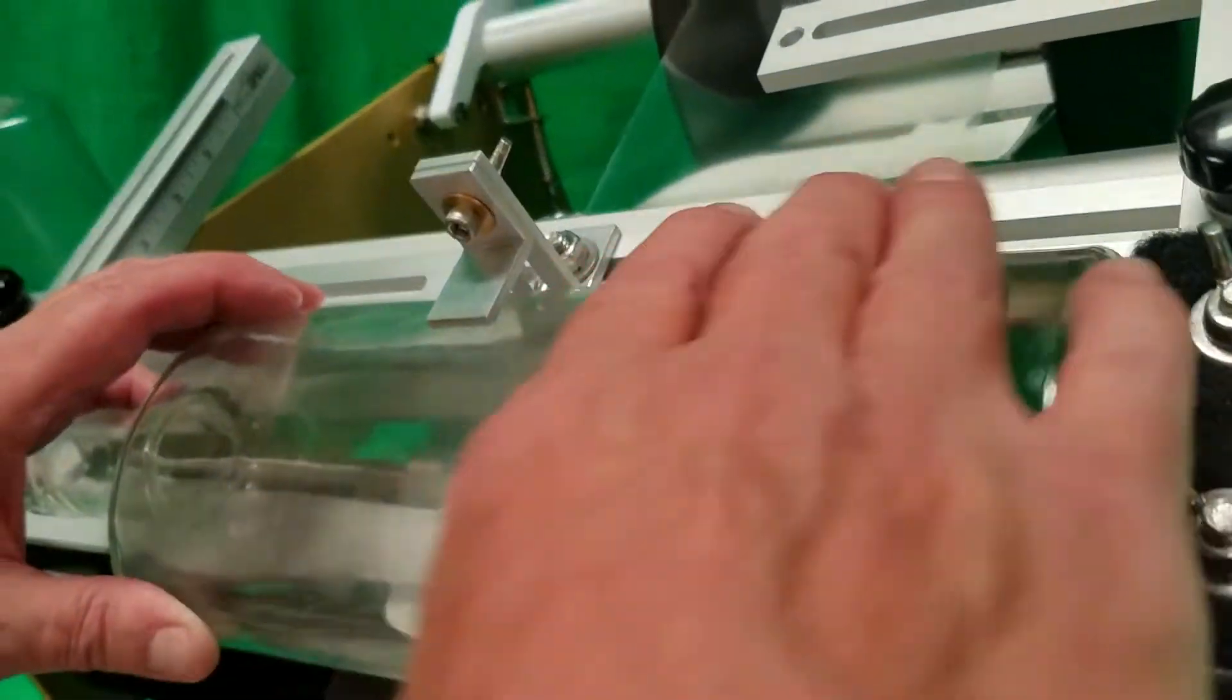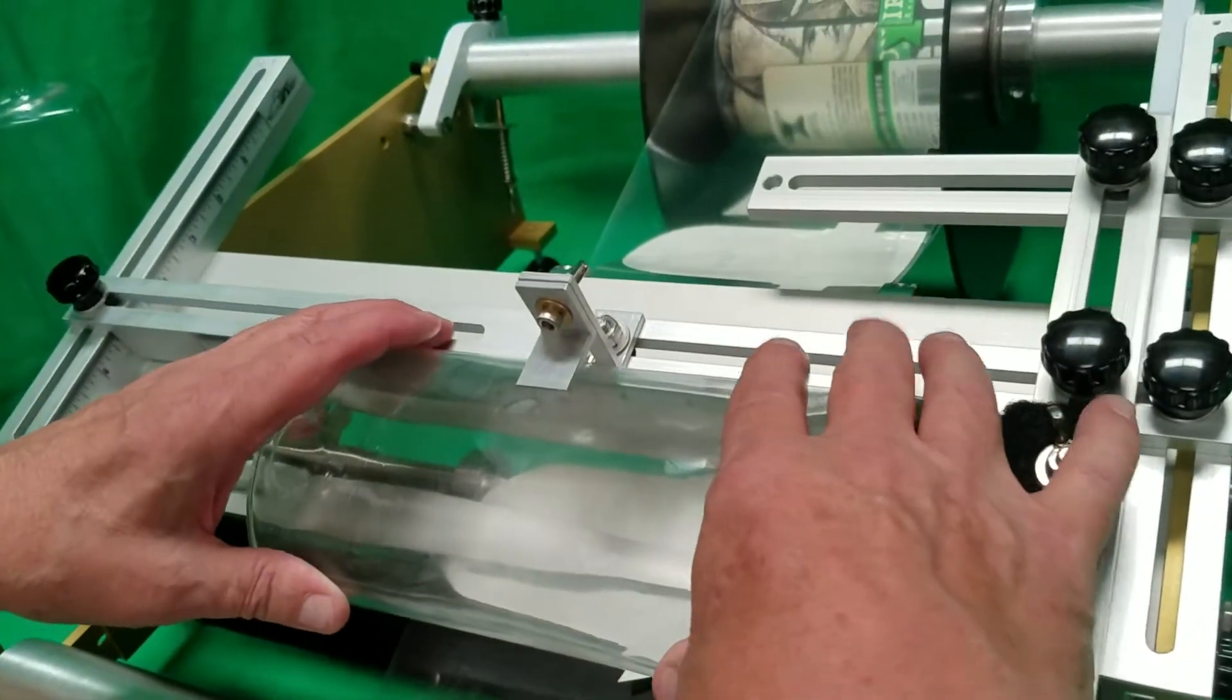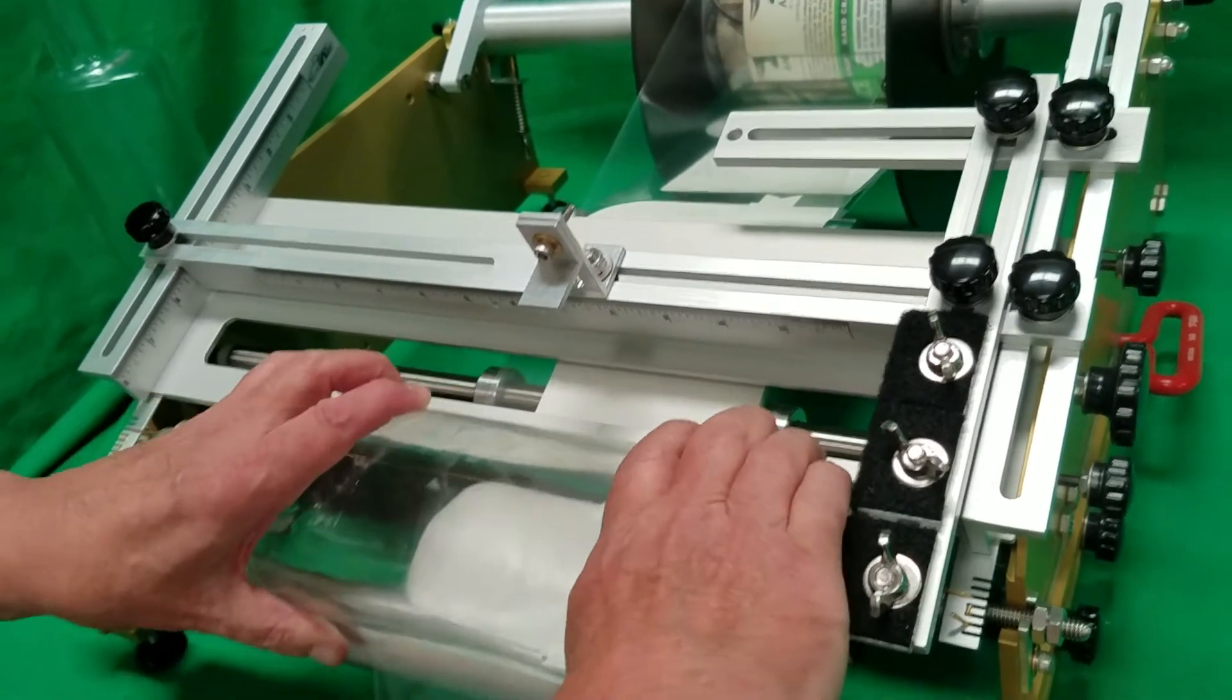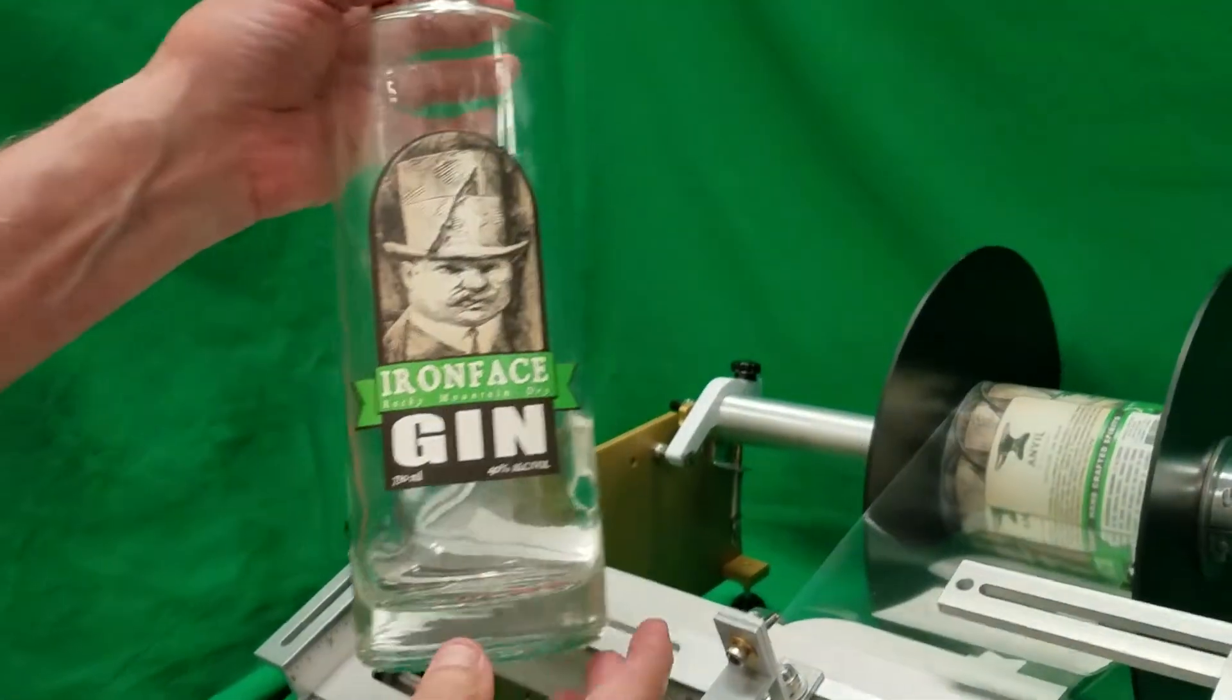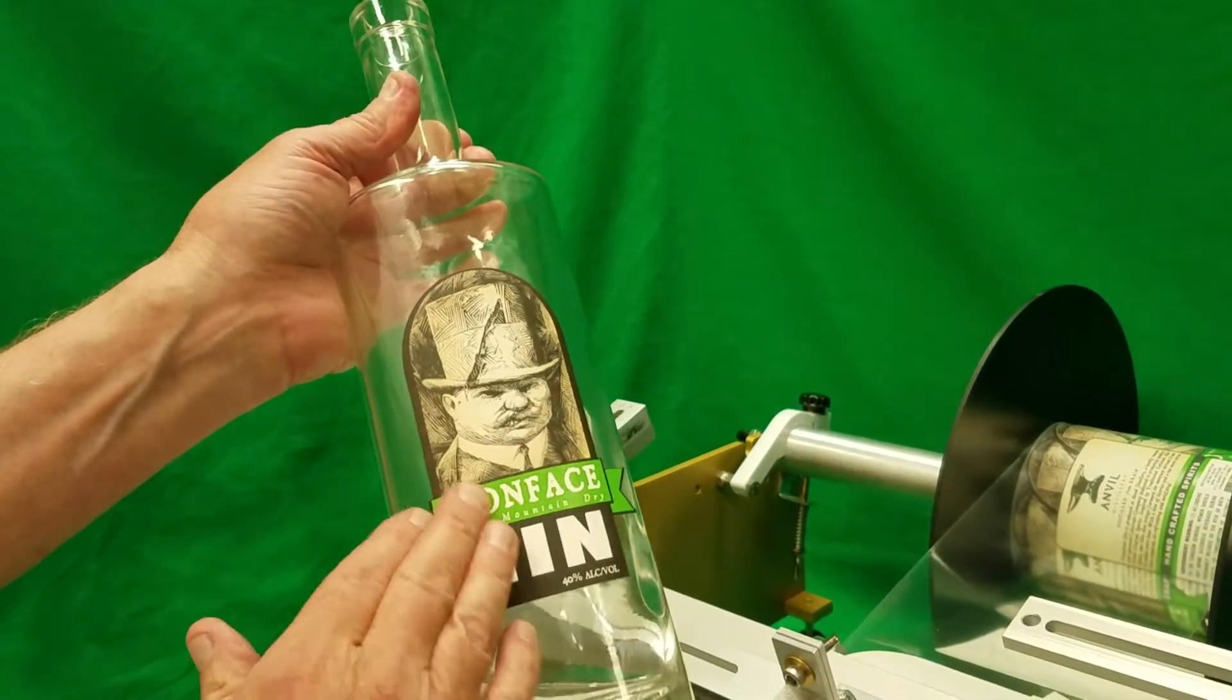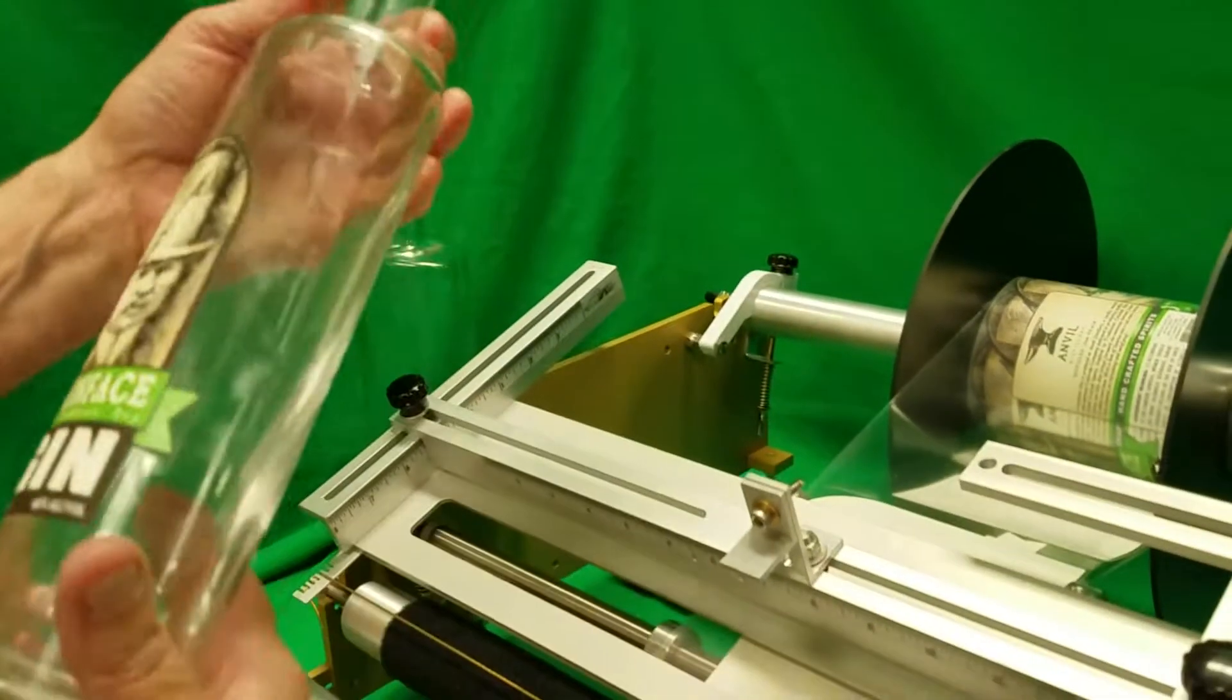We've got it in the right position, push down, the label is kissed, and we swipe the label on. It was put in the perfect position, perfectly centered, absolutely no bubbles.